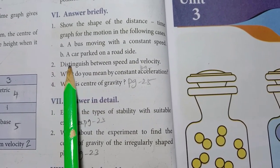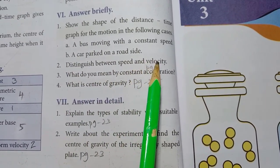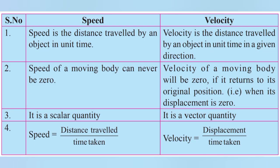2nd one — distinguish between speed and velocity. Speed is the distance travelled by an object in unit time. Velocity is the distance travelled by an object in unit time in a given direction. The speed of a moving body can never be zero; the velocity of a moving body will be zero if it returns to its original position, i.e., when displacement is zero.